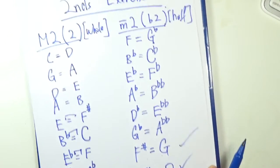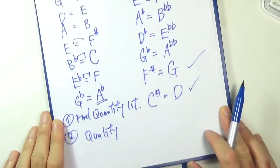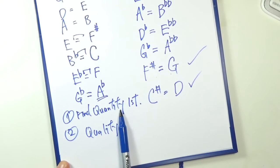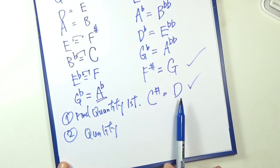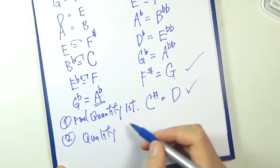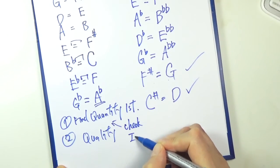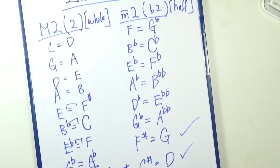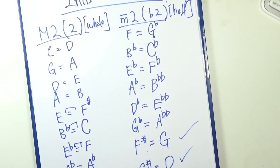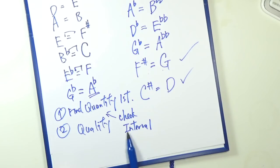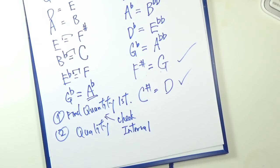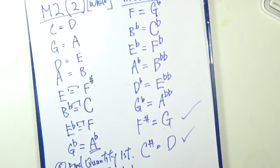So that's your first exercise, first interval exercise. So again to recap, find your quantity first. Meaning you don't have to look at the sharp flat of a note. Just put down, for example D in this case. And then you check the interval. Check interval. If you need a whole step, make them a whole step apart. If you need a half step, make them a half step apart. And then that should enable you to get the correct quality. So that's it for this video.